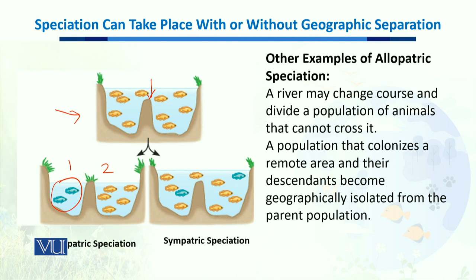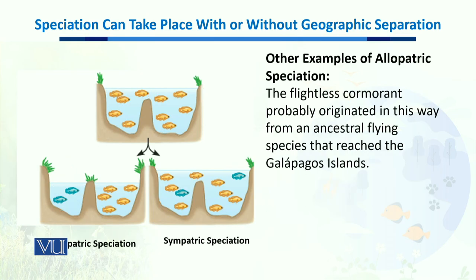Similarly, a population that colonizes a remote area and whose descendants become geographically isolated from the parent population will no longer mix with the existing species, resulting in allopatric speciation. A real example is the flightless cormorant in the Galapagos Islands — a bird whose ancestors could fly, but after reaching and becoming isolated on the islands, it lost the ability to fly and became a distinct species.